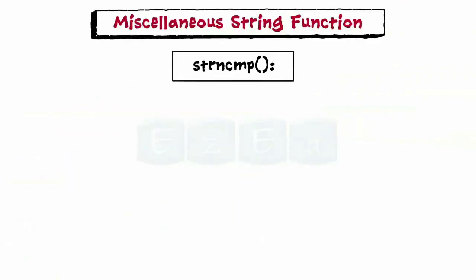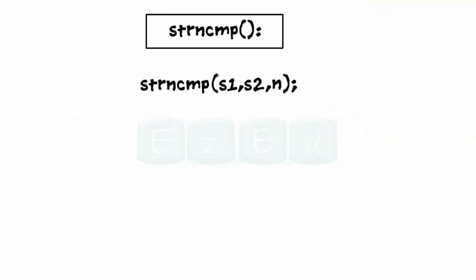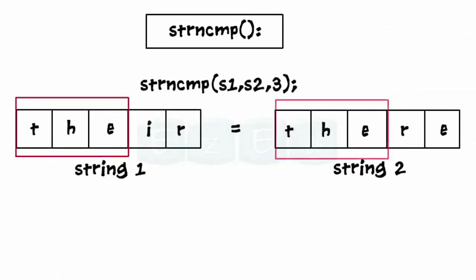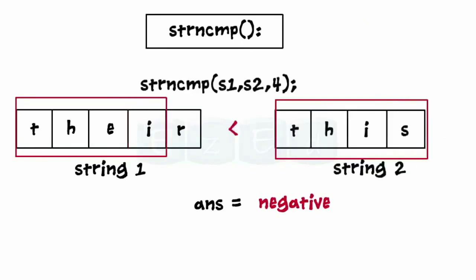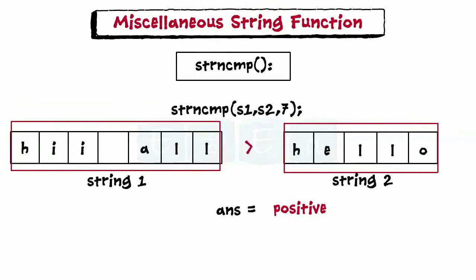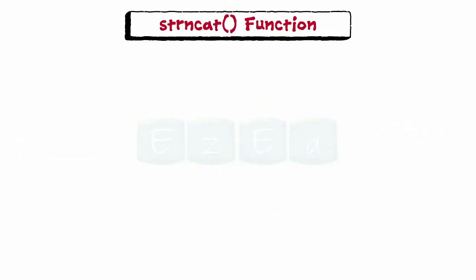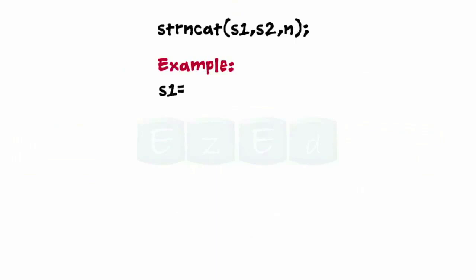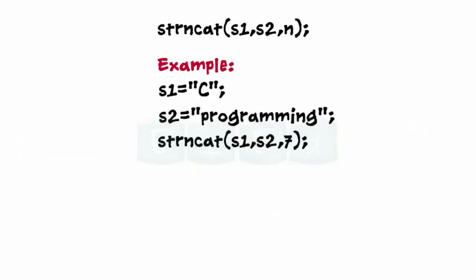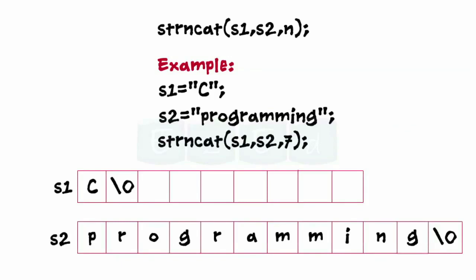strncmp is the same as strcmp but with a variation — it has three parameters and only compares the leftmost n characters of s1 to s2. It returns 0 if they are equal, a negative number if the s1 substring is less than s2, and a positive number otherwise. strncat is also a concatenation function that takes three parameters and concatenates the leftmost n characters of s2 with s1. For example, seven characters from the string 'programming' are concatenated with string 1, which is 'C'.